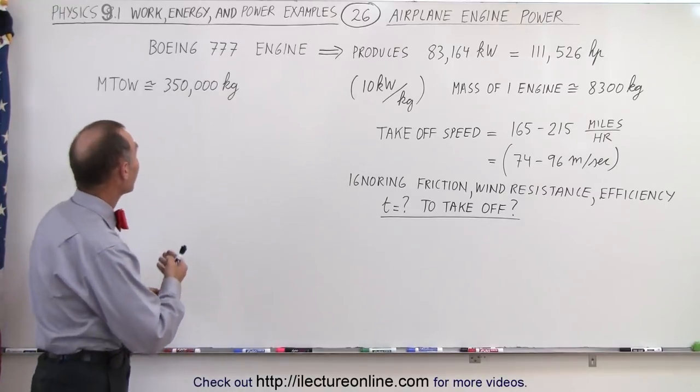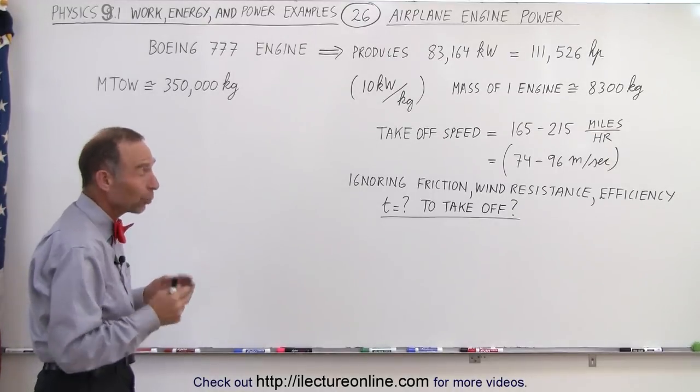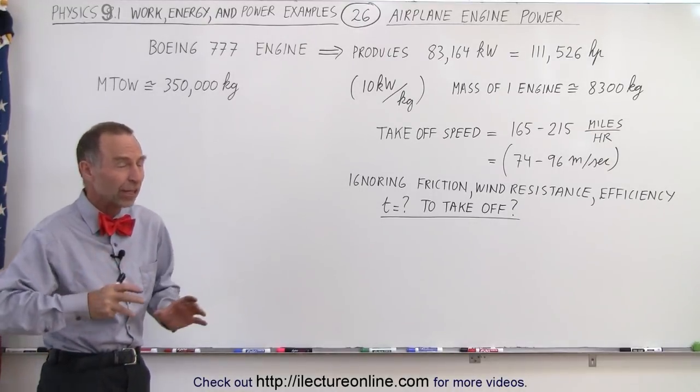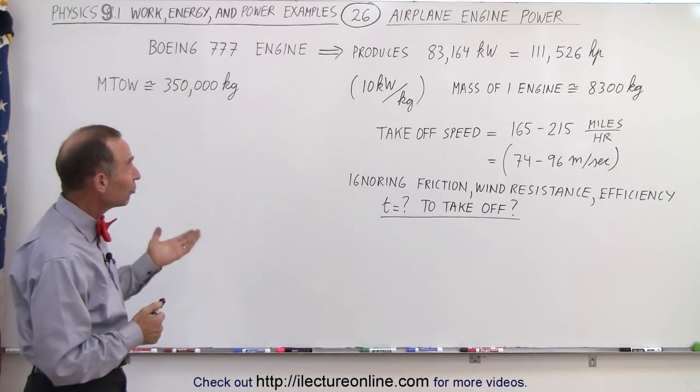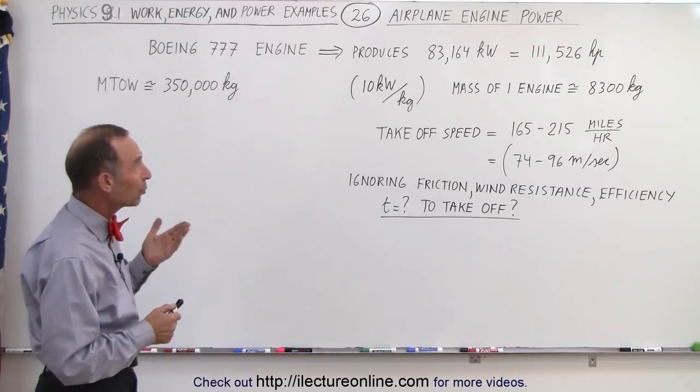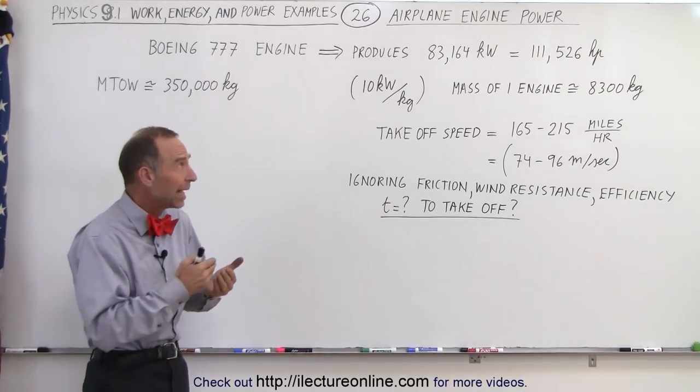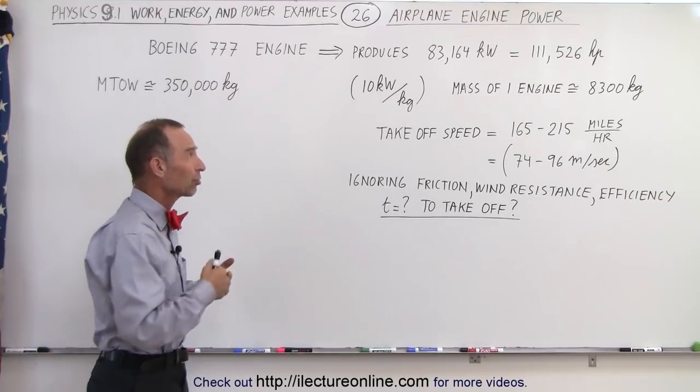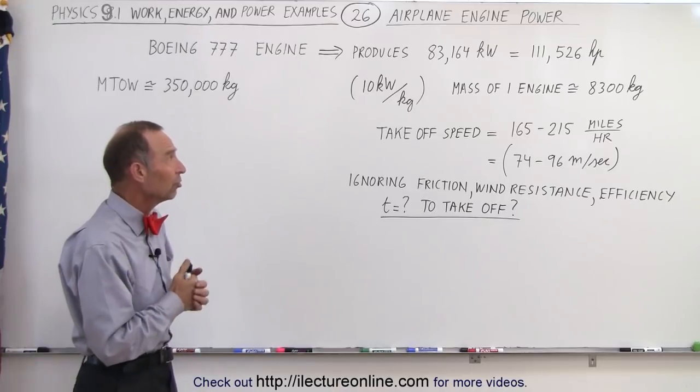If we take for example the Boeing 777, which is quite a machine, it's one of those wide-body planes that only requires two engines to get it up in the air to fly tremendous distances. Well, each of those engines produces 83,164 kilowatts of power at maximum peak production, which is over 111,000 horsepower for each one engine.